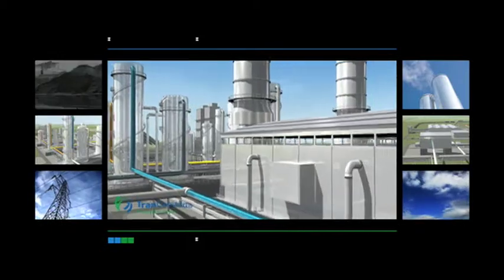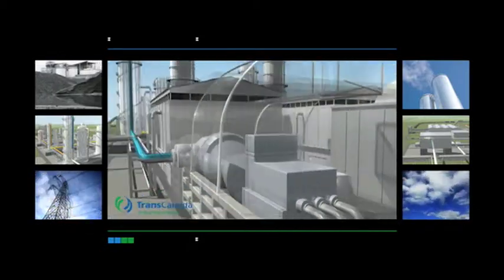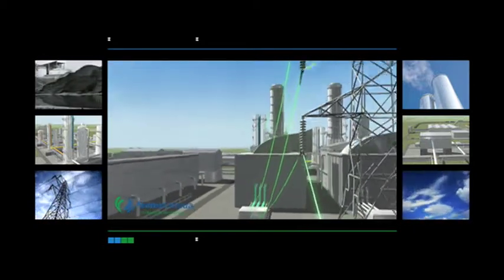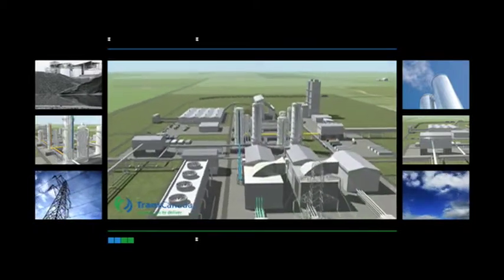The majority of the hydrogen is used to fuel our co-generation power plant, generating over 300 megawatts of clean electricity for Saskatchewan, enough to power more than 300,000 homes.